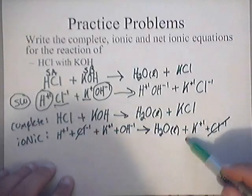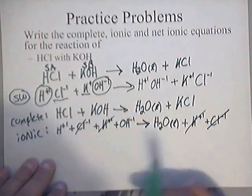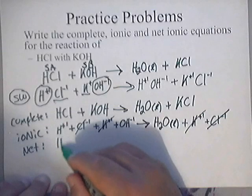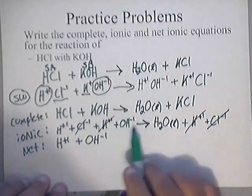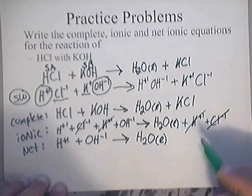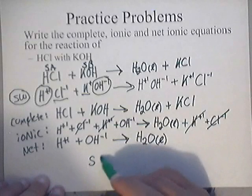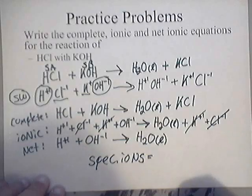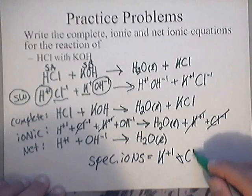Now K⁺ cancels with K⁺, and Cl⁻ cancels with Cl⁻ — those are your spectator ions. So your net ionic equation is: H⁺ (aq) + OH⁻ (aq) yields H₂O (l). And that's it — you're done. Your spectator ions are the K⁺ and the Cl⁻ that we marked out.